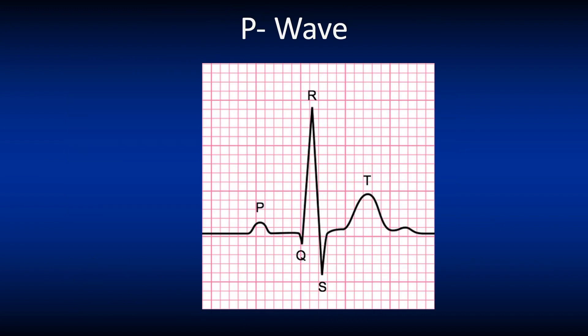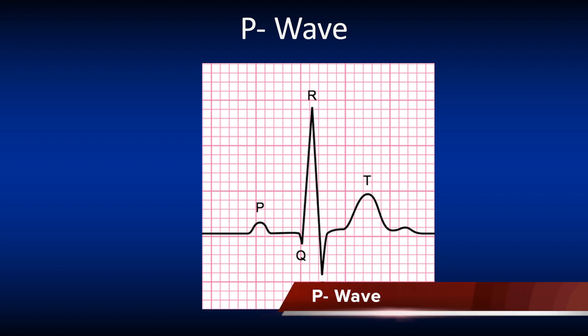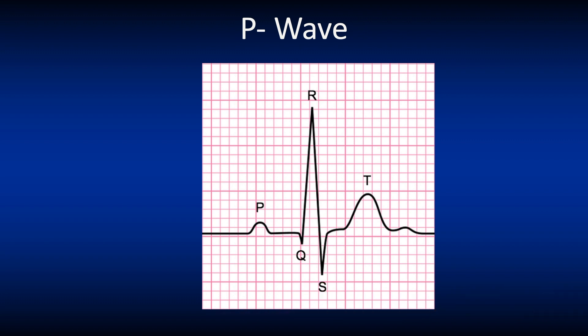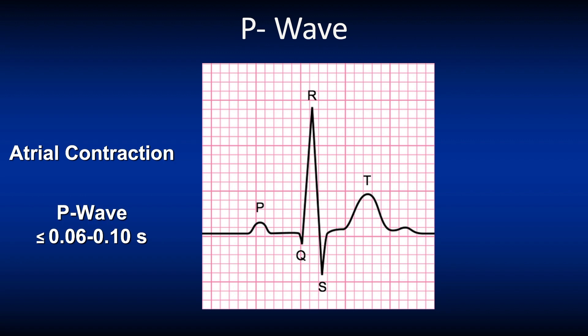Let's start reviewing the anatomy of the ECG. The P wave is the first wave in the cardiac cycle and it represents atrial depolarization and the spread of electrical impulses throughout the right and left atria. The duration of the P wave is usually less than 0.1 seconds or less than 2.5 small boxes. If the left atrium is enlarged, depolarization takes longer and P wave duration will increase to equal or above 0.12 seconds.